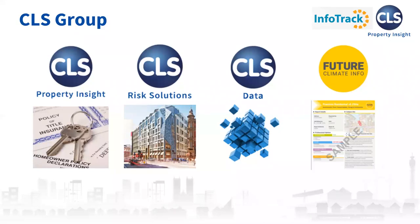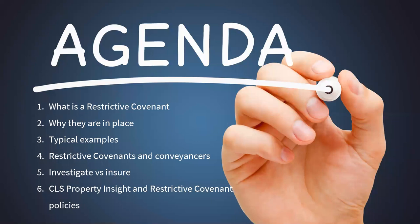The topic today reflects ourselves — restrictive covenants. Over the course of the next few slides, we'll consider what restrictive covenants are and why they're in place. We'll touch on typical examples and how they impact property lawyers. We'll consider the issue of investigate versus insure, how to consider enforceability, and we'll look at the CLS Property Insight policy. If you have any questions throughout the presentation, please post them and Adam and I will come back to you afterwards.